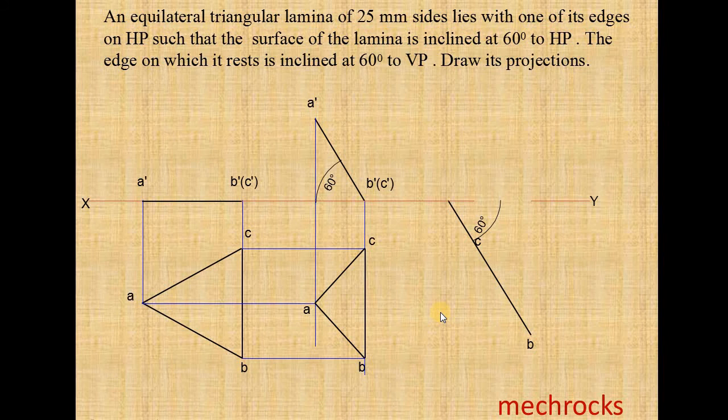Now similarly you locate the A also. Now we join AB and AC. From this you draw a vertical line upwards from A, from C, from B also.